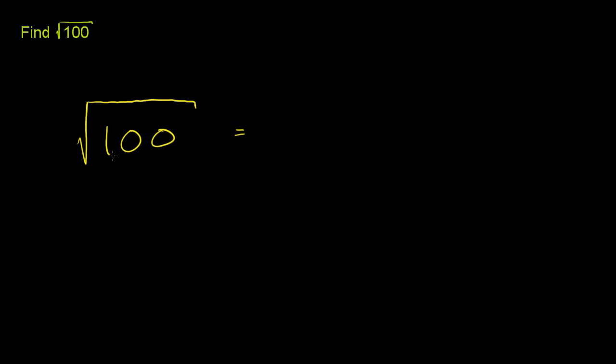So let's think about what this is saying. This is asking us to find the number, the positive number, that when I multiply that number by itself, I get 100. So what number, when I multiply by itself, do I get 100?